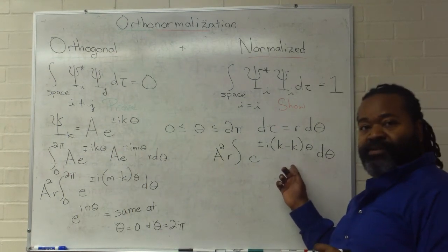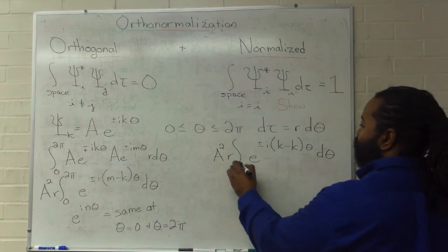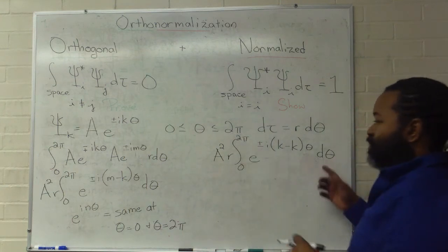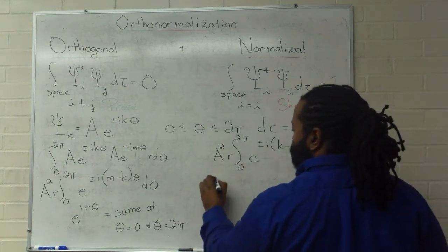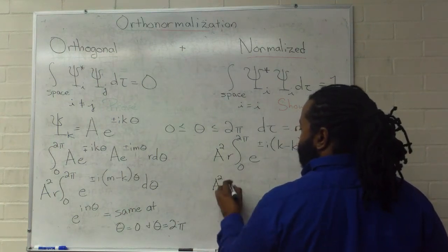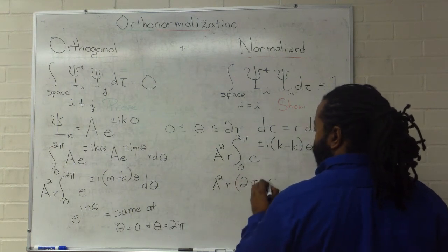Well, this is 0. e to the 0 is just 1. So, I'm integrating from 0 to 2 pi, just d theta by itself. So, that becomes a squared r, 2 pi minus 0.